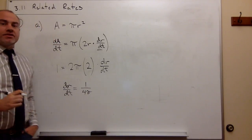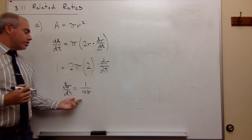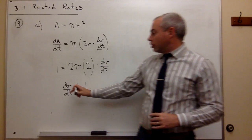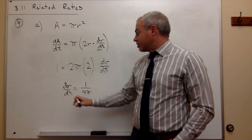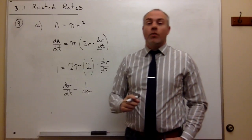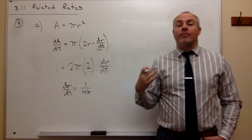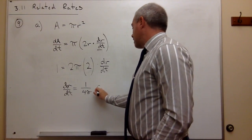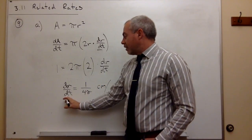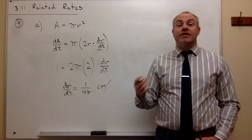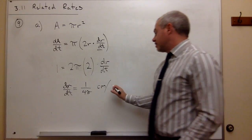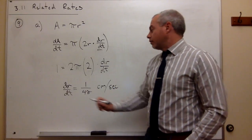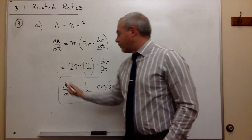Because this is an application problem, I need to include units. To find the units on dr/dt, I look at what r is measured in — centimeters — so the numerator is centimeters. Time in this problem is measured in seconds, so it's centimeters per second. So dr/dt equals 1 over 4 pi centimeters per second. That's our answer for part A.